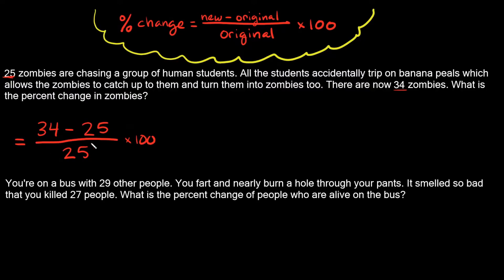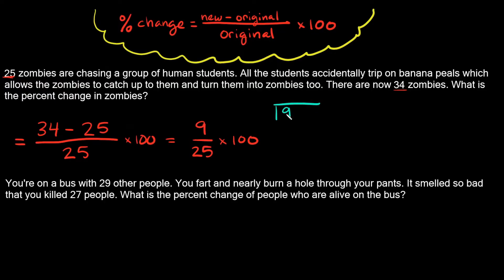Let's simplify what we have. What is 34 minus 25? Well, 34 minus 25 is equal to 9. So that's going to be 9 over 25, and then we're multiplying by 100. So what is 9 over 25? Well, 9 over 25 is the same thing as 9 divided by 25. Let's solve that.